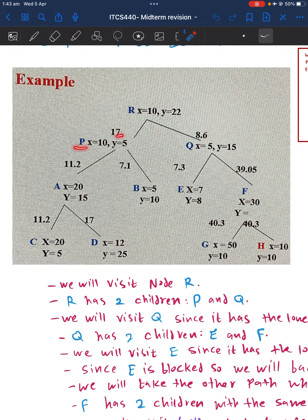No, so we will go deep into here. We have B and Q. We will go to the one with the smallest number. B has 17, Q has 8.6, so we will visit Q. When we visit Q, we also have two children for Q. Q is not the goal, still we are looking for H.